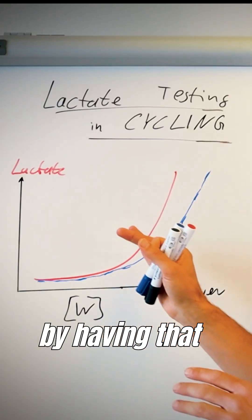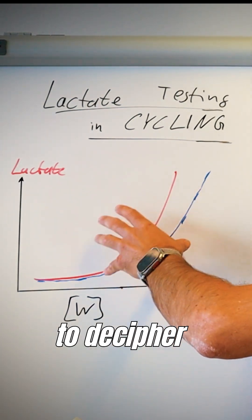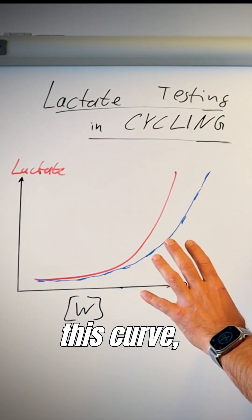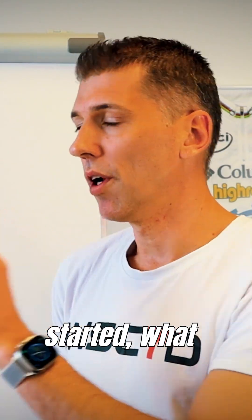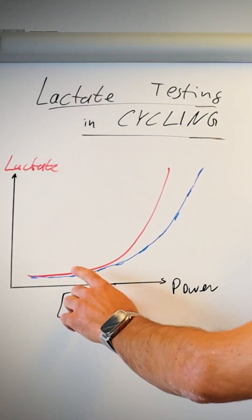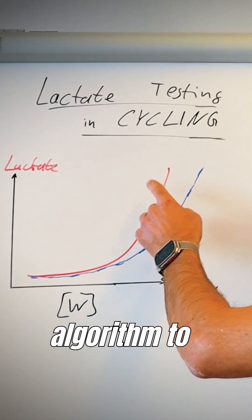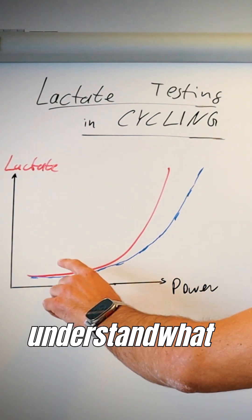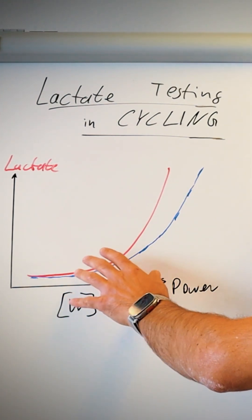By having that algorithm which is able to decipher what is behind this curve, you can now see exactly how the aerobic system developed, how VO2max developed, how the anaerobic system developed. And on top of that, we are able with this algorithm to understand what is the lactate production that creates the lactate curve.